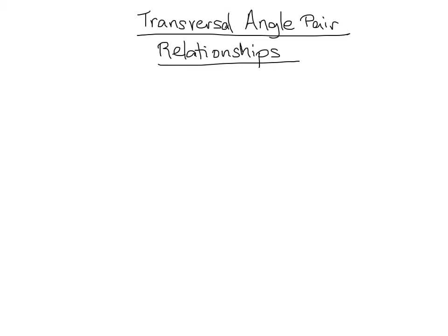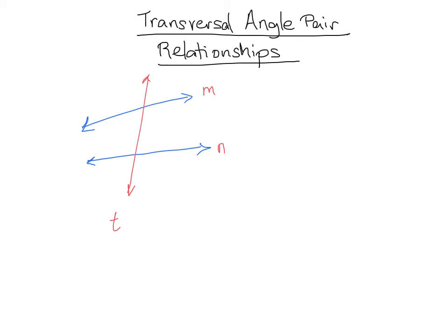A transversal is a line that intersects two or more coplanar lines at two different points. So let's say I have two lines here — they can be parallel, but they don't have to be. As long as I have two lines in the same plane, the transversal — let's make it red — is a line that passes through or intersects both of those lines. We can call that line T, and the other lines M and N. The transversal is the line that goes through two or more of those coplanar lines.